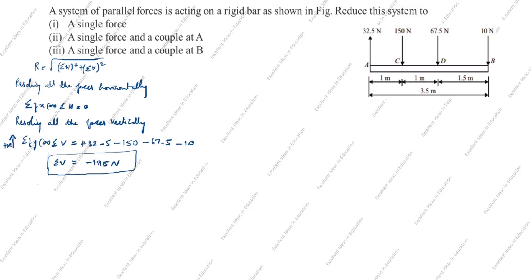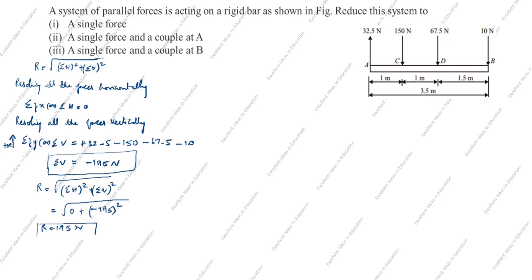Now we will find the single resultant force. R = √((ΣH)² + (ΣV)²) = √(0² + (-195)²) = 195 N. Since ΣV is negative, the resultant is acting vertically downward.